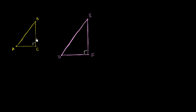We've got two right triangles here, and we also know that they both have an angle whose measure is equal to theta. So angle A is congruent to angle D. For any triangle, if you know two of the angles, you're going to know the third angle, because the sum of the angles of a triangle add up to 180 degrees. So if you have two angles in common, you're going to have three angles in common, and you are dealing with similar triangles.